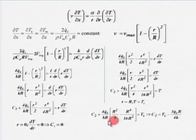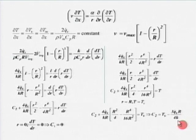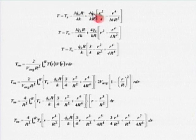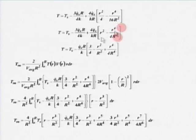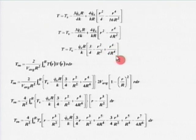Substituting r = R, T = T_s: C₂ + (4Q_dot_s)/(kR)[R²/4 − R⁴/(16R²)] = T_s, giving C₂ = T_s − 3Q_dot_s R/(4k). Substituting C₂ back into the temperature equation: T = T_s − (3Q_dot_s R)/(4k) + (4Q_dot_s)/(kR)[r²/4 − r⁴/(16R²)].